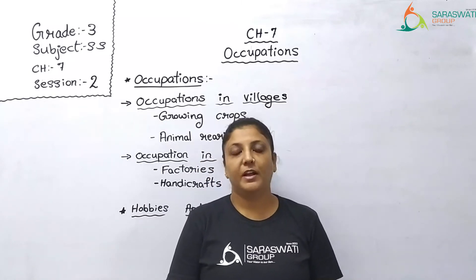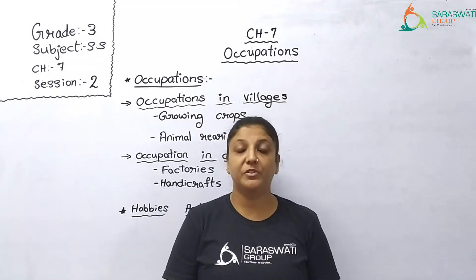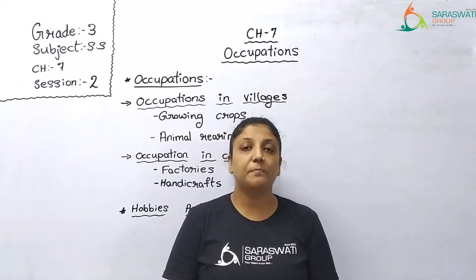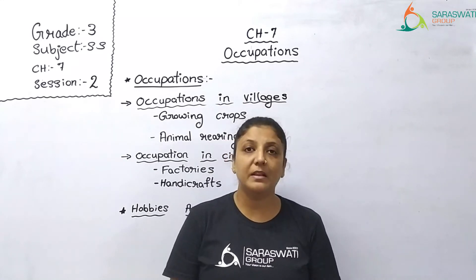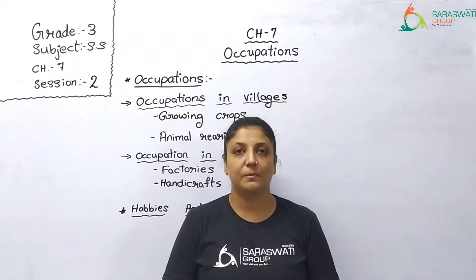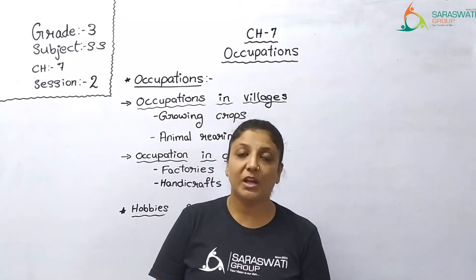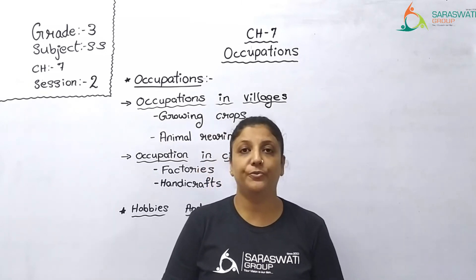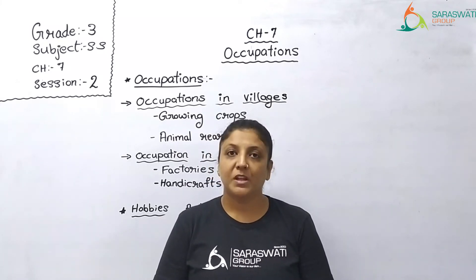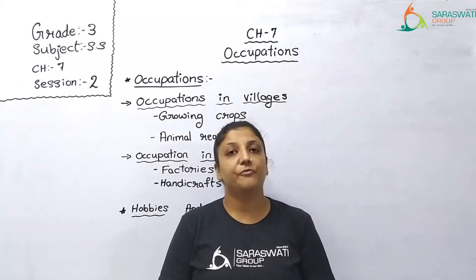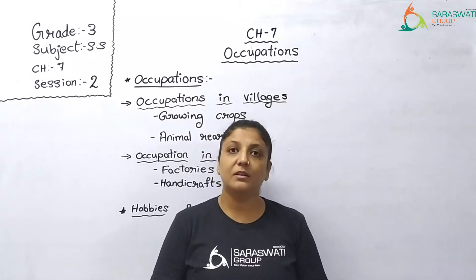In our earlier session I explained to you what is occupation and why people have to perform different occupations. They perform occupations because they need to earn money to meet their daily requirements like food, clothing, house, etc. To earn money, they have to be educated, they have to be skillful. They have to see their basic needs and according to that, they choose their own occupation — their jobs from which they can earn money. So we learnt all that in our previous session.